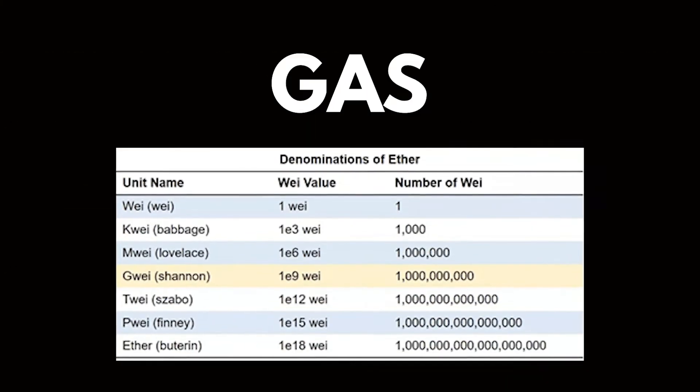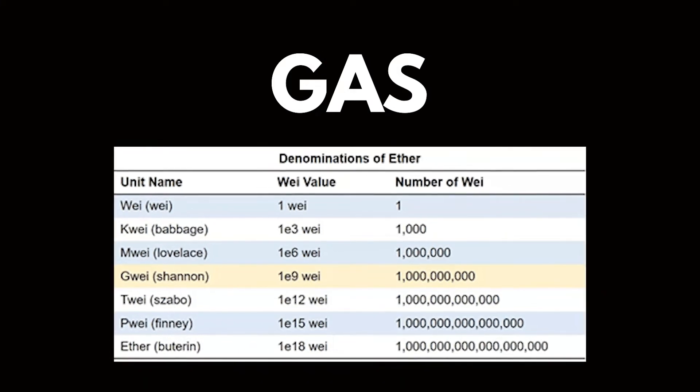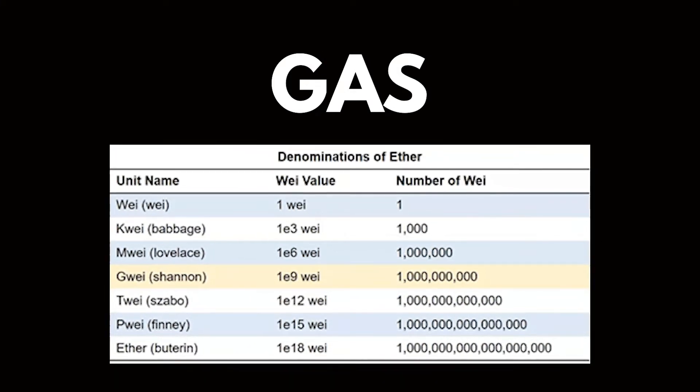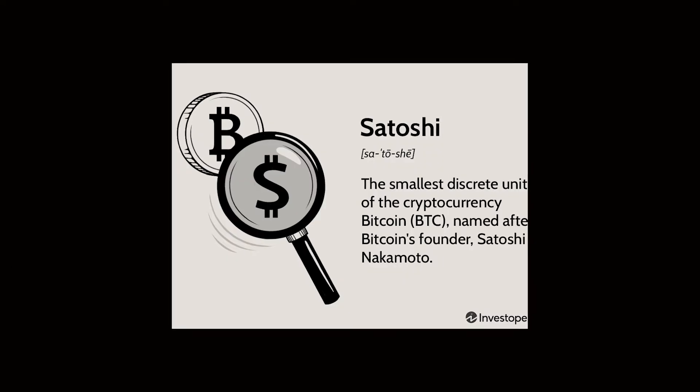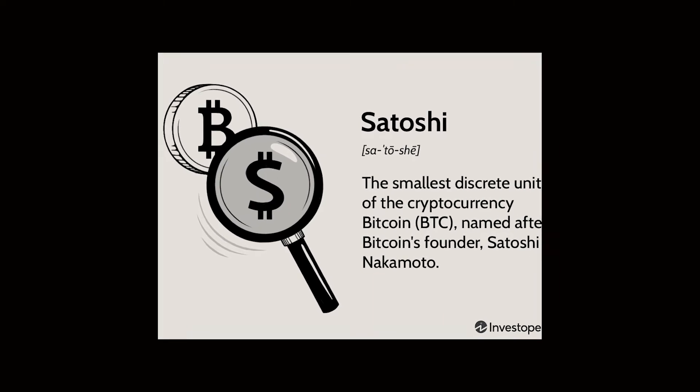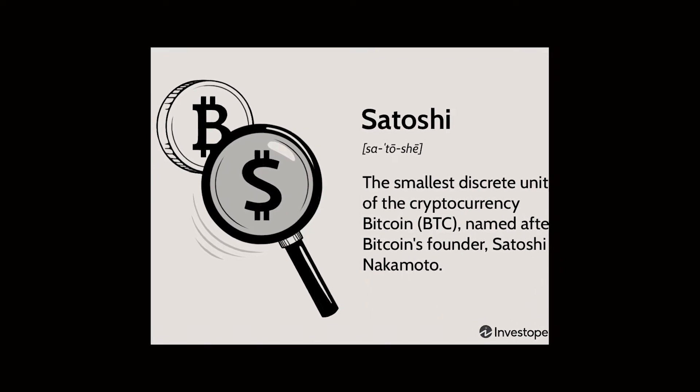Gas is measured in Gwei, a denomination of Ethereum's native currency, ETH. Each Gwei is equal to 0.0000001 ETH.